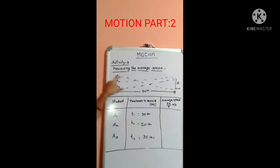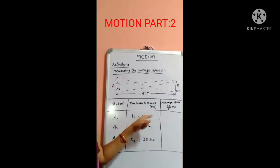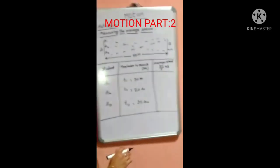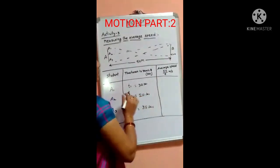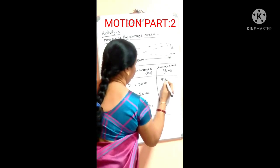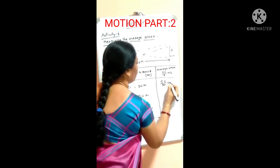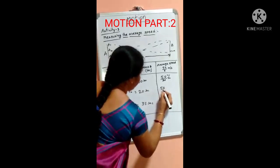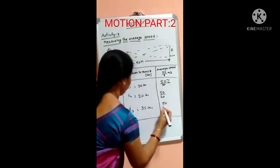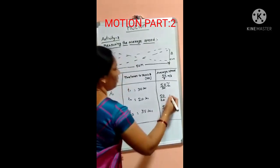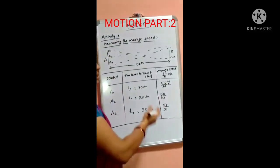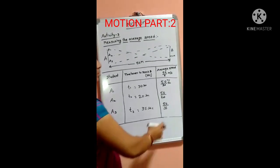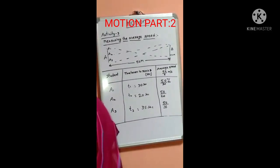So in this way we calculate the time taken to reach B for A1, A2, and A3. Now we calculate the average speed: 50 meters by 30 seconds for A1. According to this calculation, those who have the greatest average speed are the winners, and those with the least average speed are last.